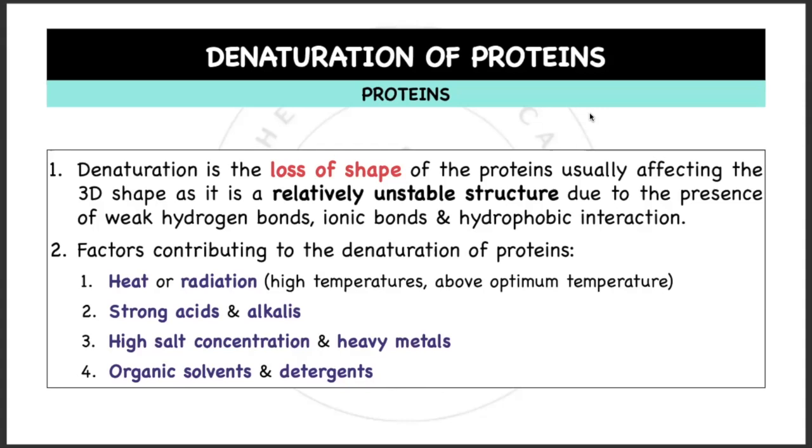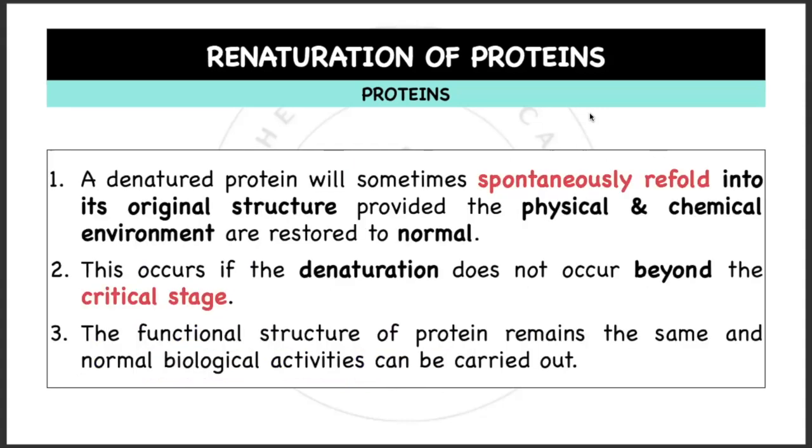Renaturation of proteins: to renature it again to how it was before, a denatured protein will sometimes spontaneously refold into its original structure provided the physical and chemical environment are restored to normal. Basically, it can return to normal. This renaturation occurs if the denaturation does not occur beyond the critical stage.